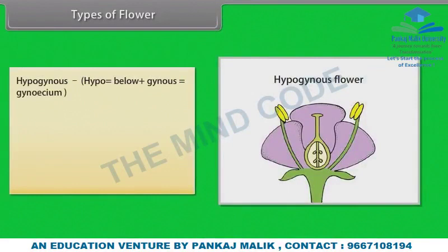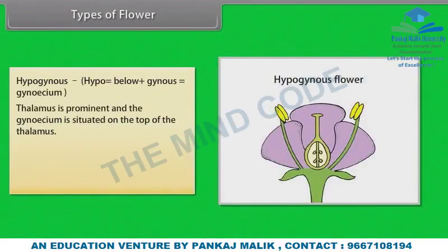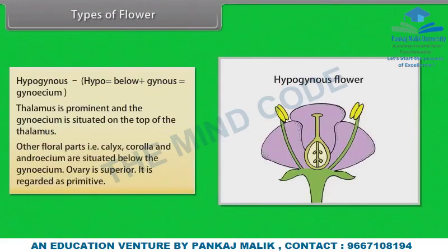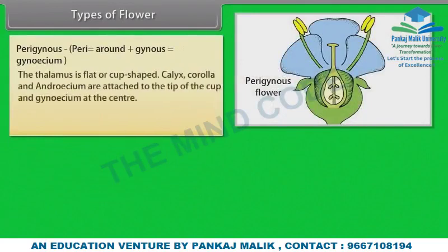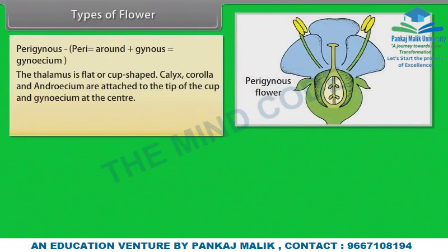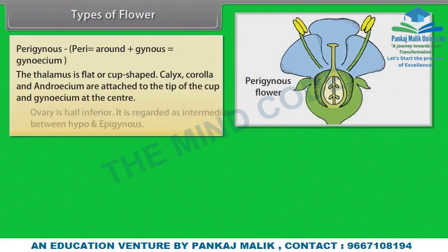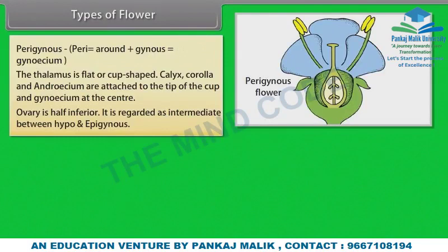In Hypogynous flowers, the thalamus is prominent and the gynosium is situated on the top of the thalamus. Other floral parts — calyx, corolla and androsium — are situated below the gynosium. Ovary is superior. It is regarded as primitive. In Perigynous flowers, the thalamus is flat or cup-shaped. Calyx, corolla and androsium are attached to the tip of the cup, and gynosium is at the center. Ovary is half inferior.